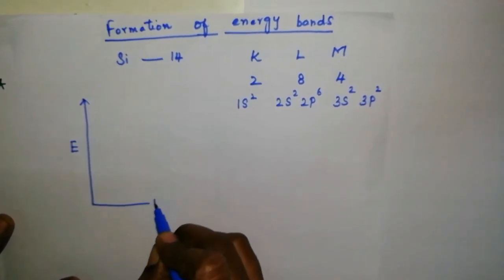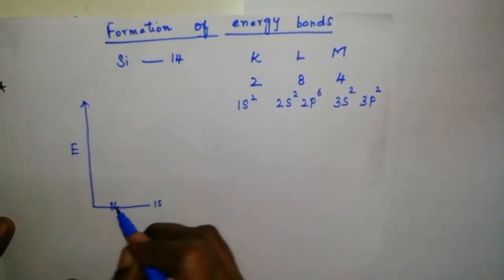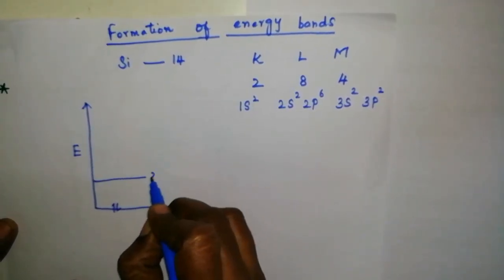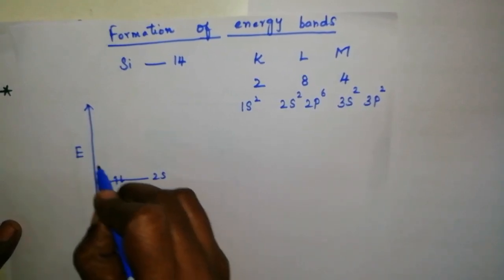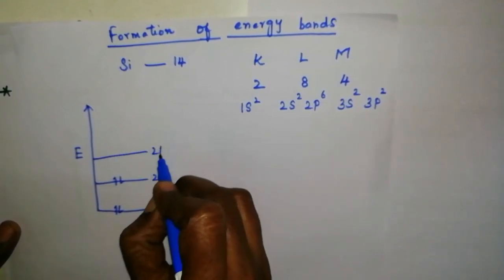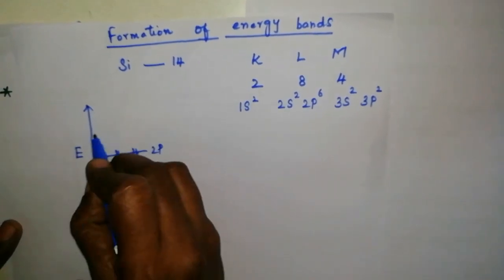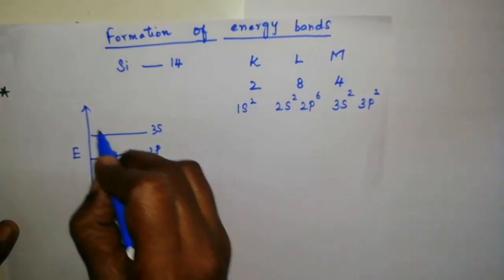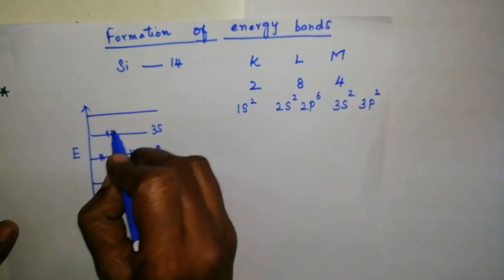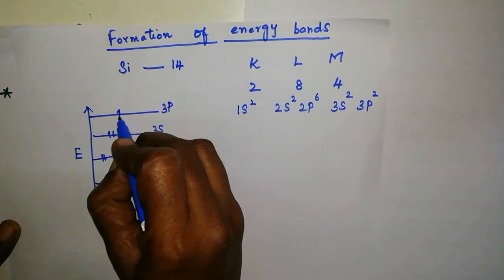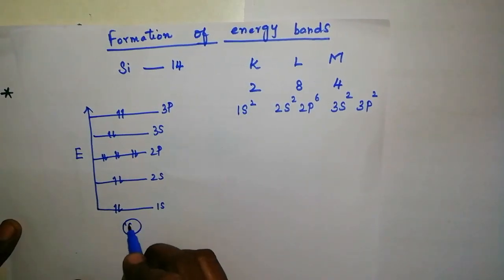An isolated atom possesses discrete energies of different electrons. If we draw that for a single silicon atom: 1s2, 2s2, 2p6, 3s2 and 3p2. This is for one silicon atom.